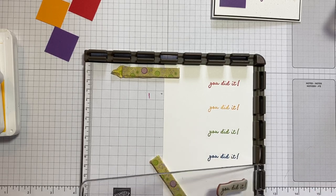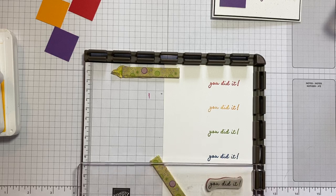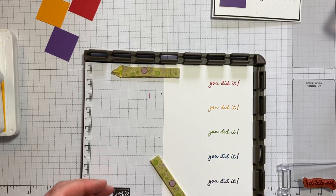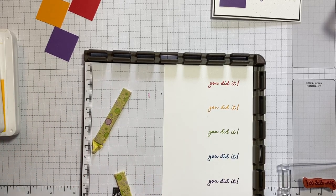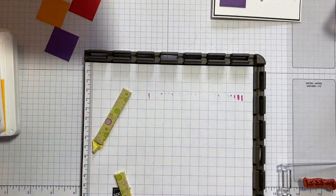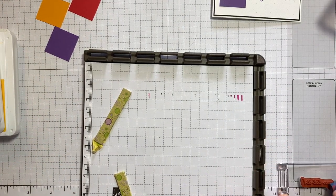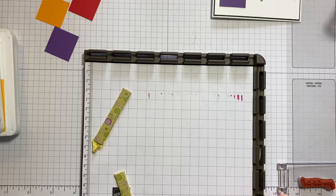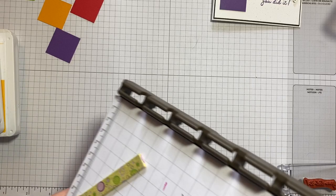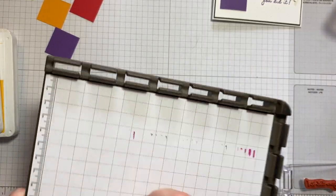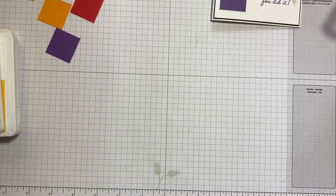Don't forget to move it down. We nearly had Gorgeous Grape on top of Pacific Point. Just going to pop the magnets back just so that I don't forget. And move the Stamparatus out of the way.